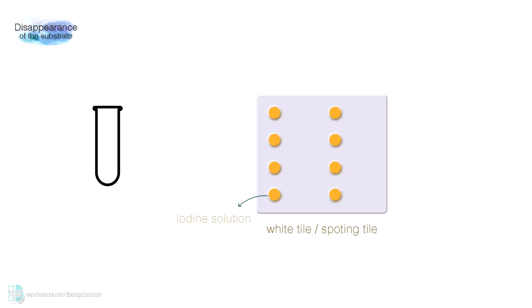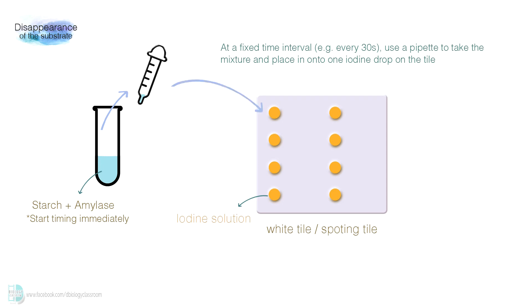In a test tube, add in amylase and starch. Start timing using a stopwatch immediately. At a fixed time interval, for example every 30 seconds, use a pipette to take a bit of the mixture and place it onto one iodine drop on the spotting tile.